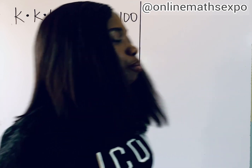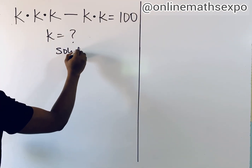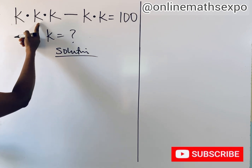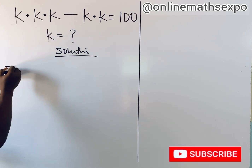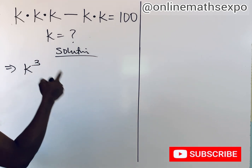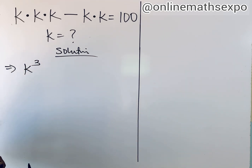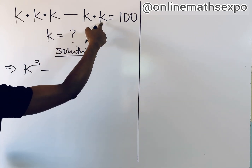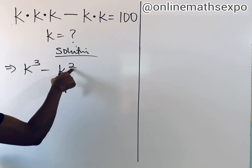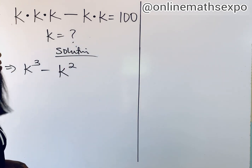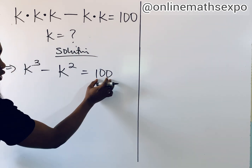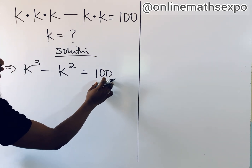So we begin with the solution. What do we have? We have k multiplying itself — k times k times k — that gives us k to the power of 3. This power shows how many times k is multiplied. Then minus k times k, which is k to the power of 2. This equals 100.